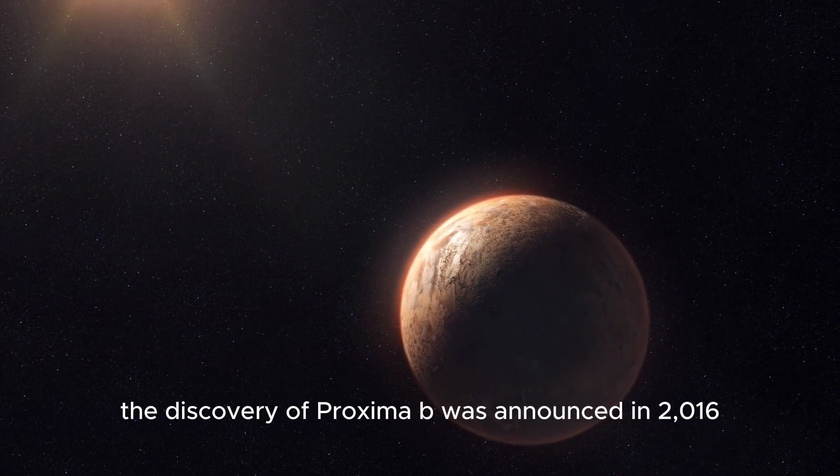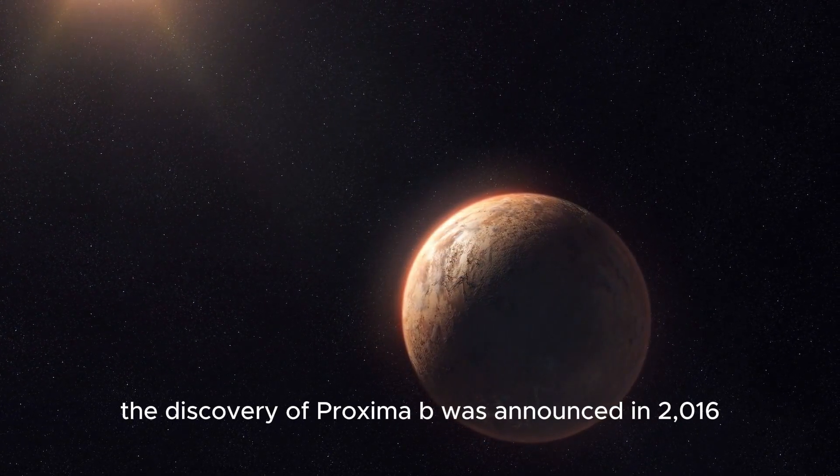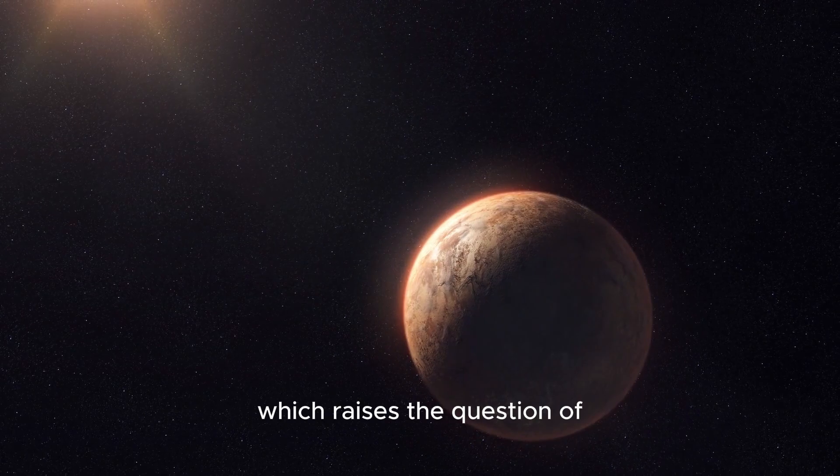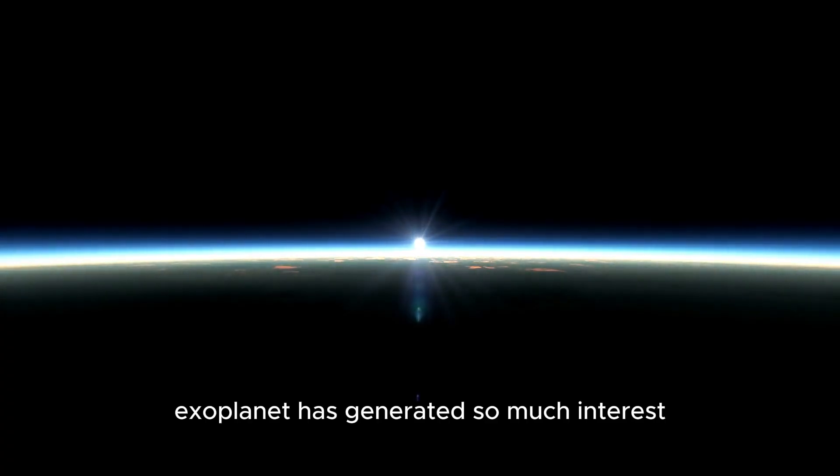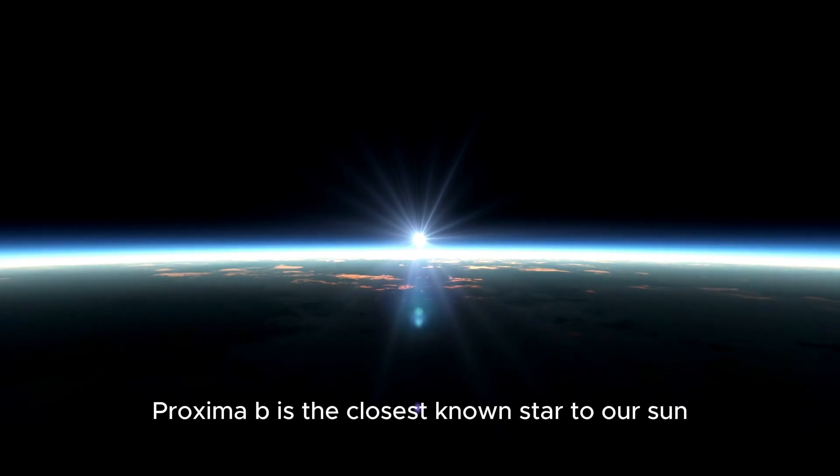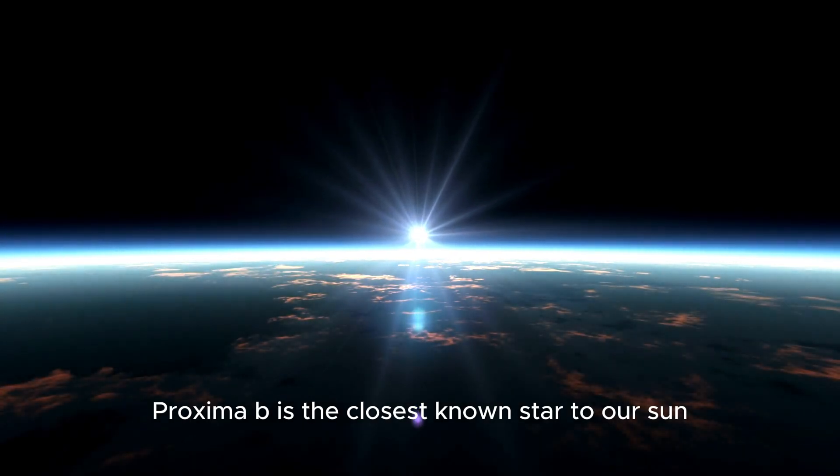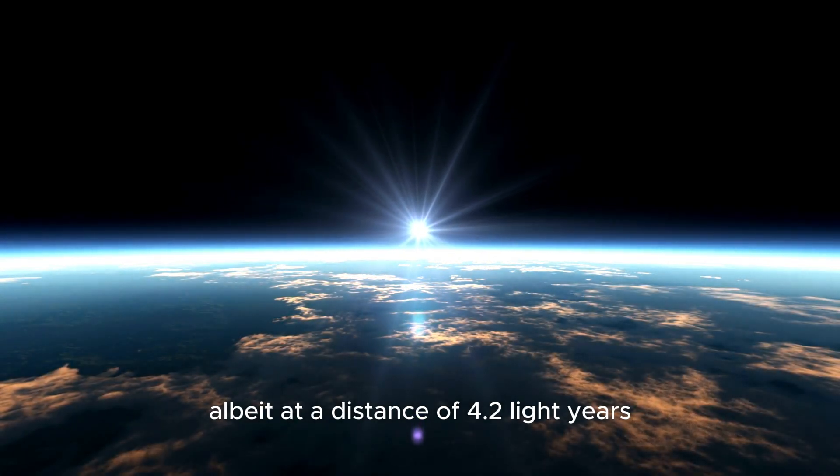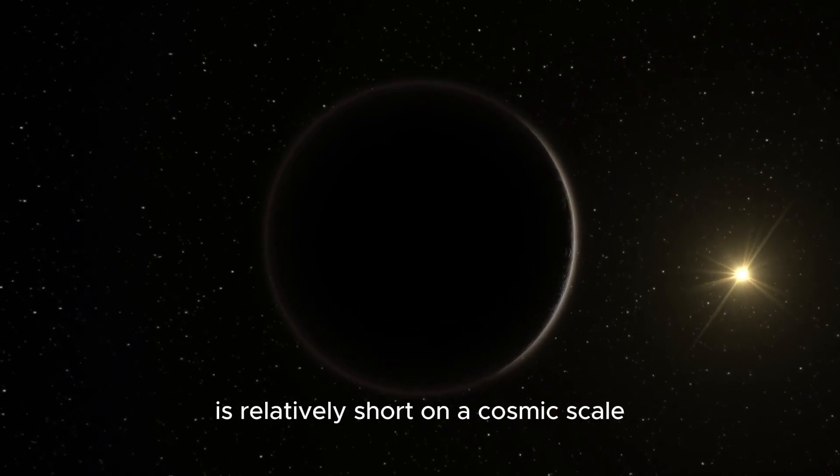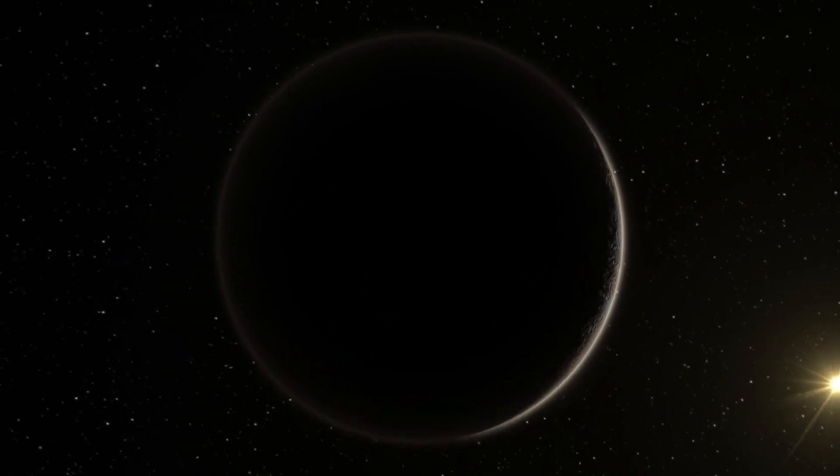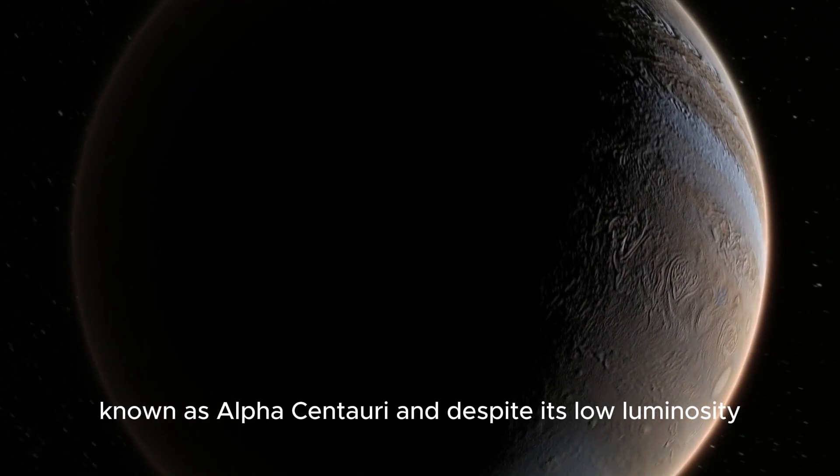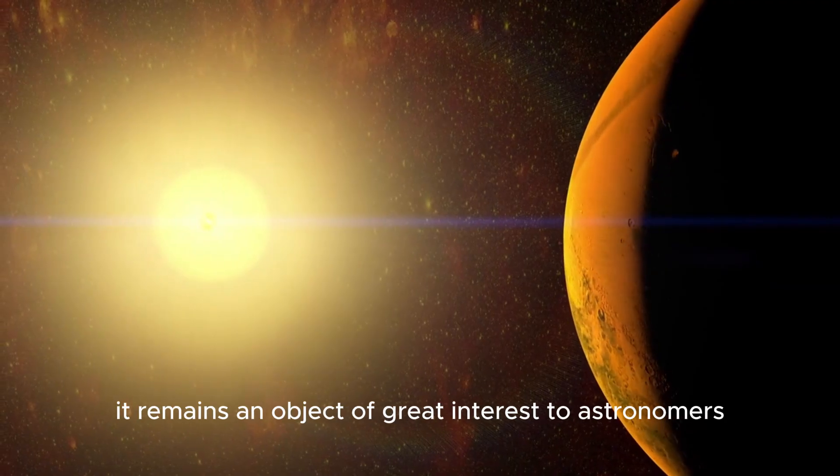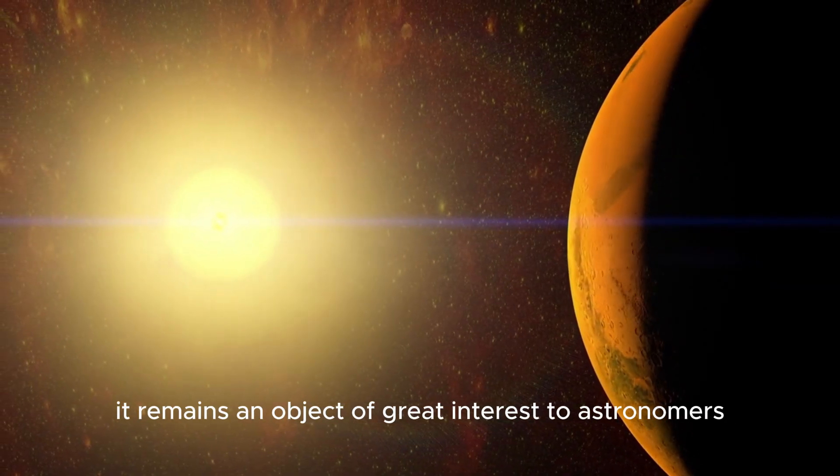The discovery of Proxima b was announced in 2016, which raises the question of why this particular exoplanet has generated so much interest. One reason is that Proxima b is the closest known star to our Sun, albeit at a distance of 4.2 light-years, which, while large to us, is relatively short on a cosmic scale. It is part of the triple star system known as Alpha Centauri, and despite its low luminosity, it remains an object of great interest to astronomers.